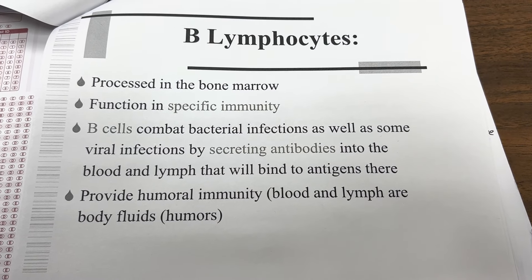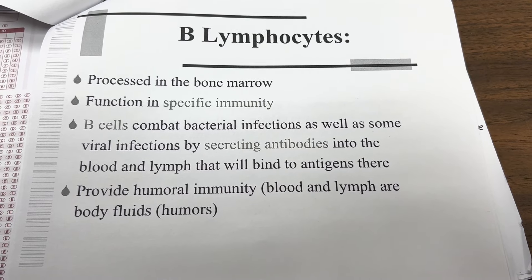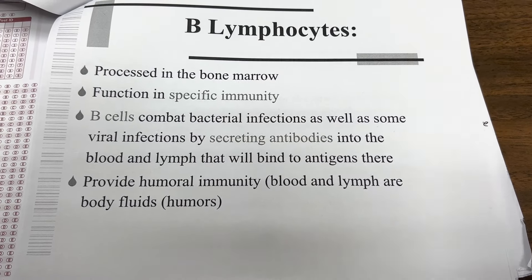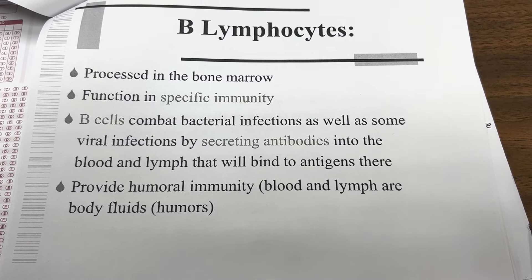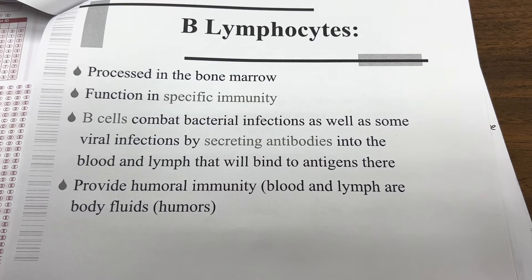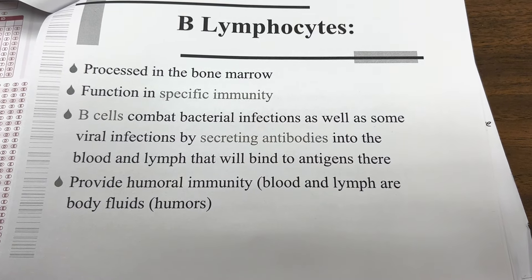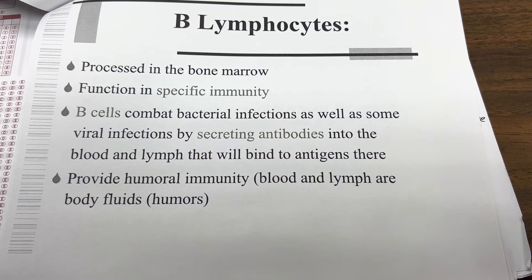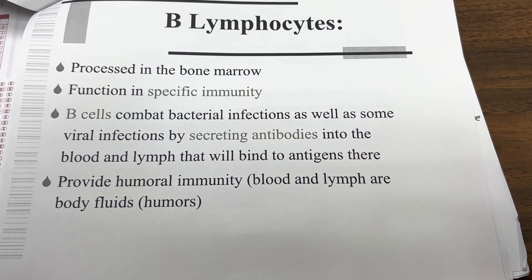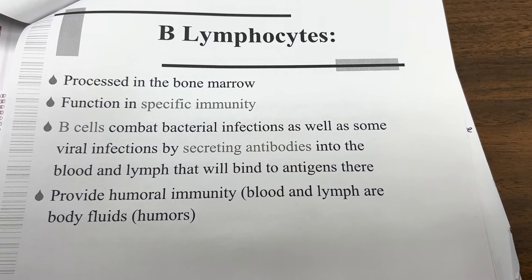B lymphocytes are processed in the bone marrow and function in specific immunity. B cells combat bacterial infections as well as some viral infections by secreting antibodies into the blood and lymph that will bind to antigens there. B lymphocytes provide humoral immunity — blood and lymph are body fluids, hence 'humoral.'